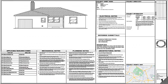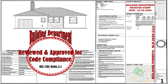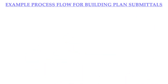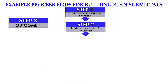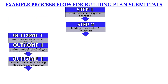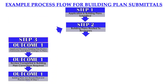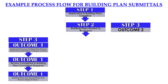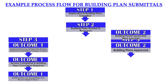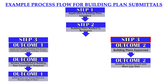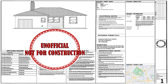First, always be sure the construction work and the inspections are done to the official building department stamped approved plans and documents. It is important to understand that before the approved plans and building permit are issued, they go through a multi-agency review for building code and local requirements verification. Often, after the review process is completed, the design changes in order to satisfy requirements addressed during the plan review, which is the reason you should not do the work to the unofficial plans.